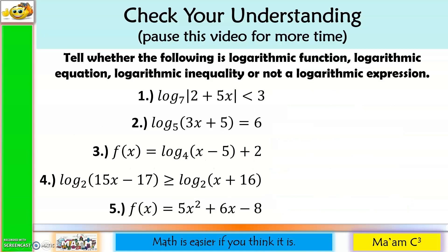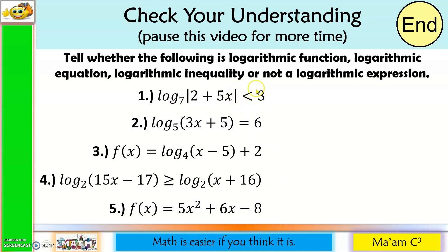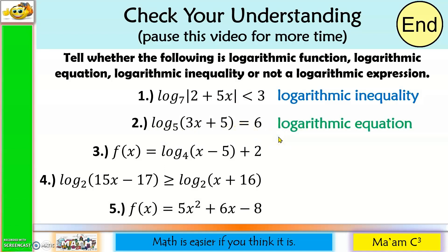Now let us check your understanding. Pause this video for more time. Here are the answers. For number one, you have a logarithmic expression and an inequality symbol — so this is a logarithmic inequality. Number two, a logarithmic expression and an equal sign — so this is a logarithmic equation. Number three, a logarithmic expression, f of x, and an equal sign — so this is a logarithmic function. Number four, both sides are logarithmic expressions and there is an inequality symbol — so this is a logarithmic inequality.